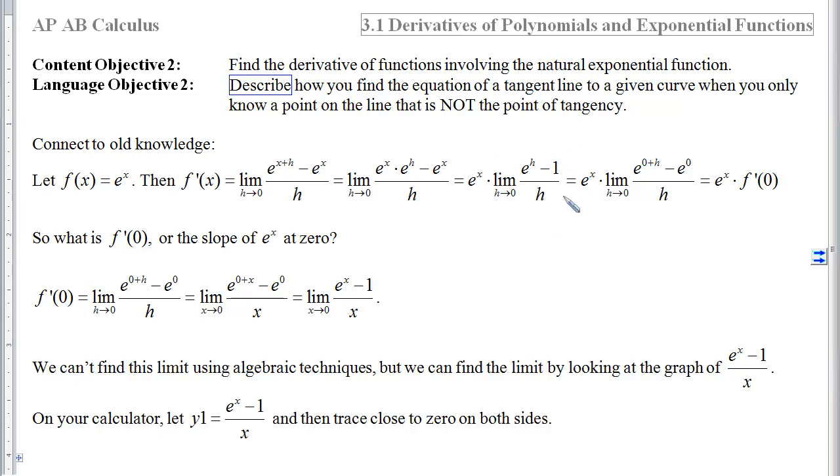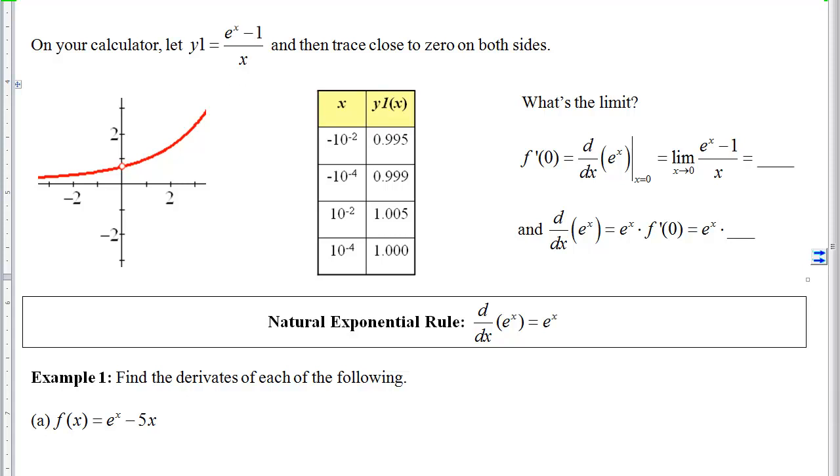Now this particular limit you should have seen before on your 2-7 group work, that second problem. So this right here, you can look at it on your calculator, you can look at your 2-7 notes, or you can look at the table of data and tracing close to 0 on both sides on your calculator that we have below in our notes. Either way, we're going to end up realizing that this is the slope of that e to the x as it crosses the y axis. So it is the derivative of the curve e to the x at 0. So we'll get an e to the x times whatever that derivative at 0 is. You can remember from your 2-7 group work, or you can scroll down here to see the table of data, that this limit is going to equal 1. So that means the derivative of that e to the x is going to equal e to the x times 1, or just e to the x.